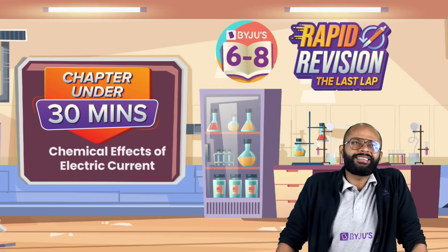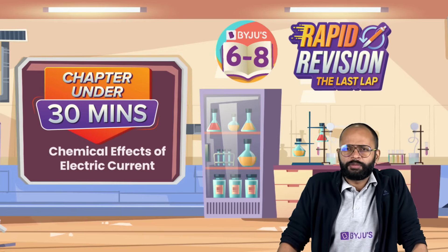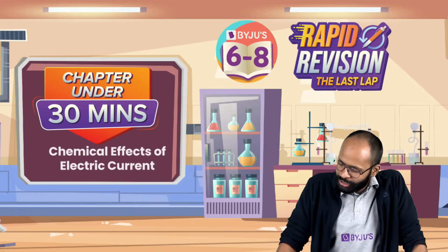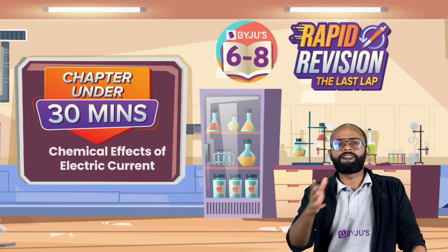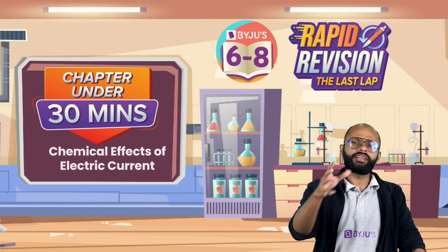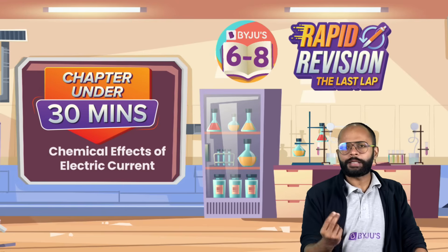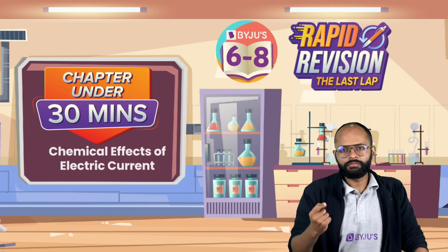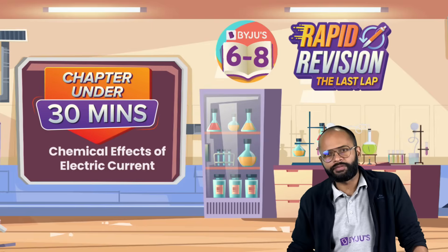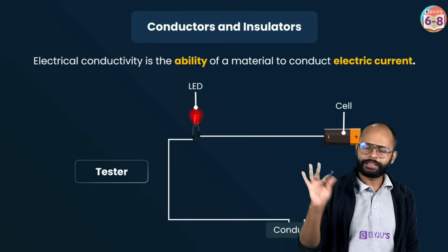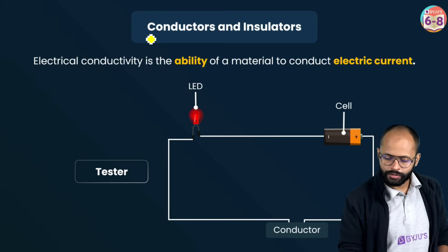What is this chapter? It's a very simple chapter. Believe me. Grade 7th was actually tougher than this but this is a very simple chapter. Let's begin slowly, nicely from conductors and insulators.